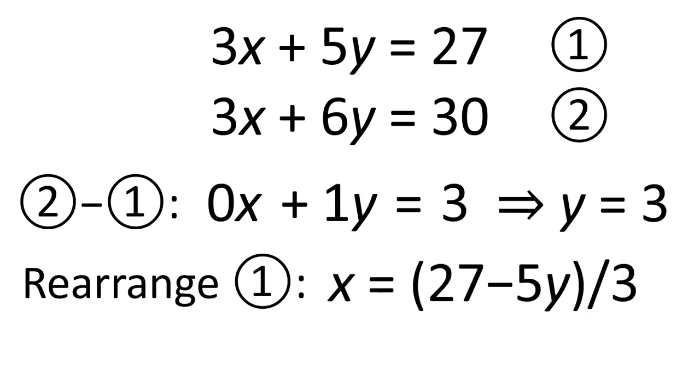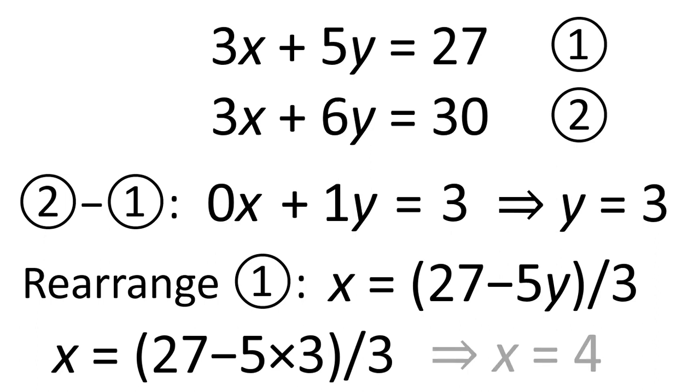If we rearrange equation 1, we've got x equals 27 take away 5y divided by 3, so we've made x the subject. We can now put in the value for y that we've calculated, and we'll find that x equals 4.